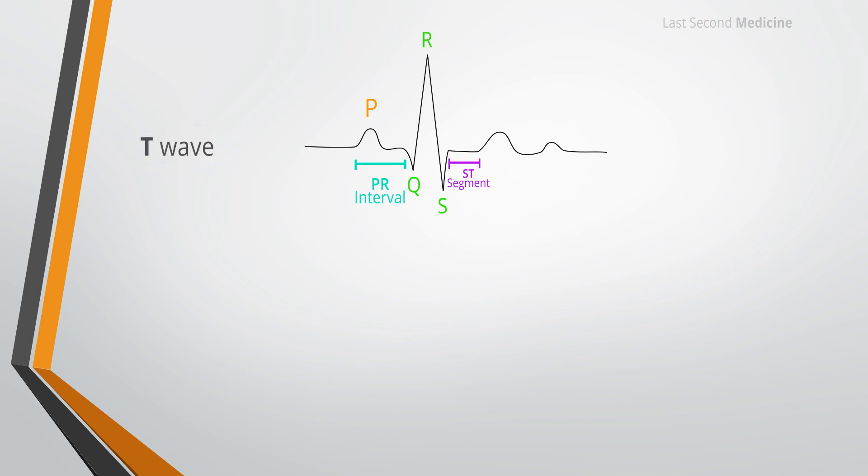Then after the ST segment, ventricular repolarization produces the T wave. The normal T wave is asymmetrical, the first half having a more gradual slope than the second half. T wave orientation usually corresponds with that of the QRS complex and thus is inverted in lead AVR and may be inverted in lead 3 as well. T wave inversion in lead V1 is also common. It is occasionally accompanied by T wave inversion in lead V2, though isolated T wave inversion in lead V2 is abnormal.